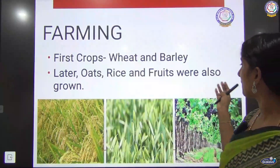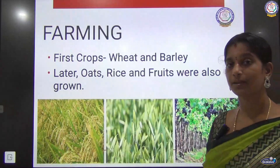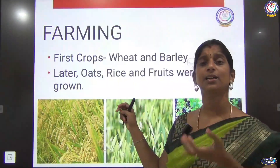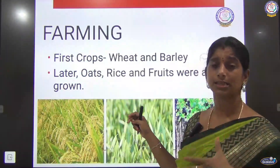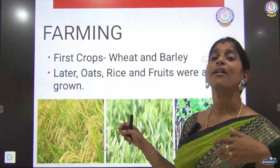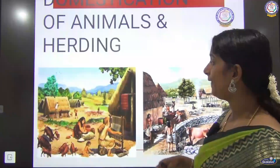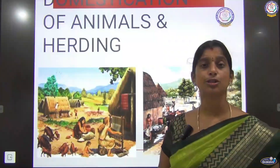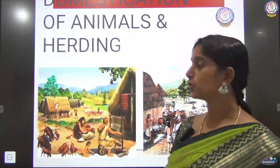Later, rice, oats, and fruits were also grown by them. So at first it started with wheat and barley, then one by one they started growing various other crops.